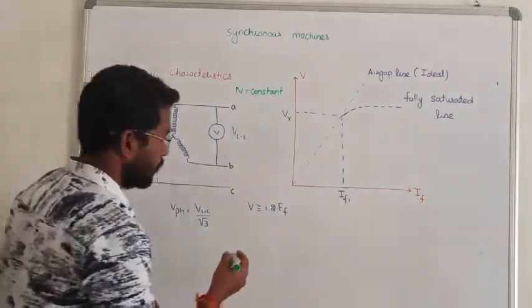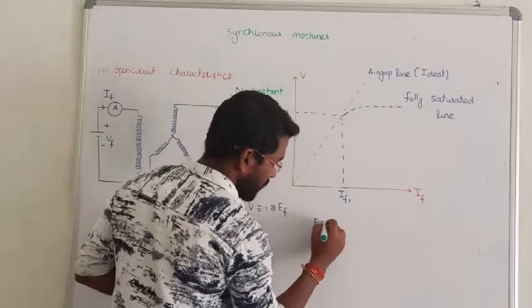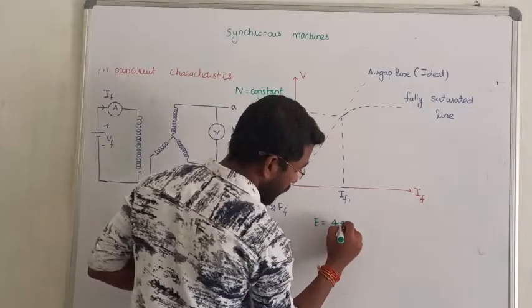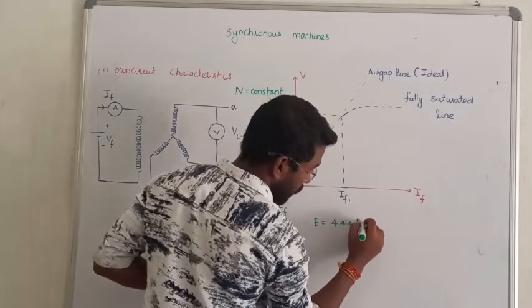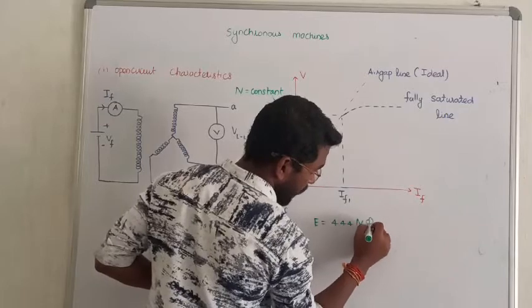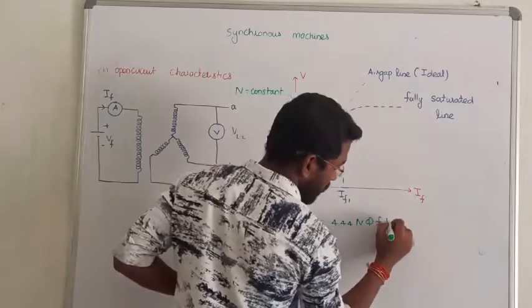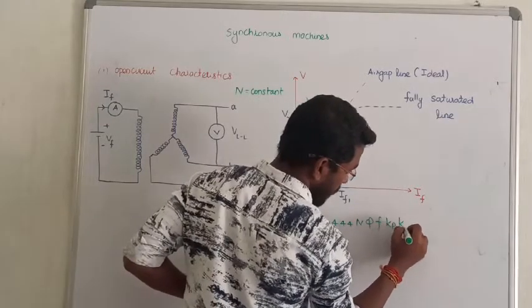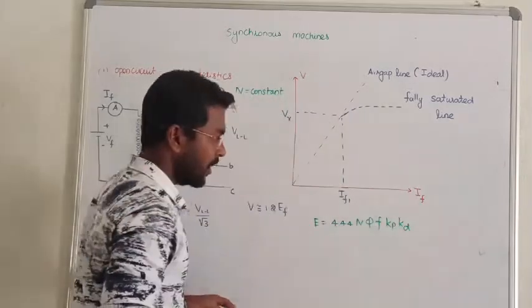Next, we saw the EMF equation. The EMF equation is 4.44 times the number of turns, flux, frequency, pitch factor, and distribution factor. Clear?